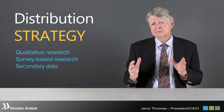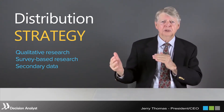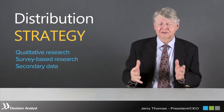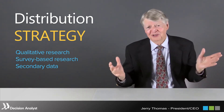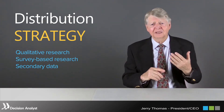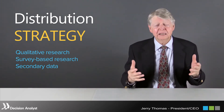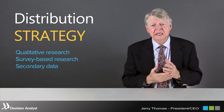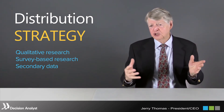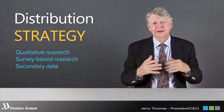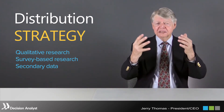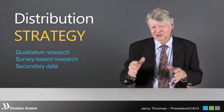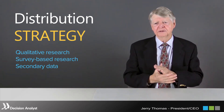Thirdly, there's a tremendous amount of secondary data available, much of it free from the US government, as well as many sources you can purchase. This includes demographic and population data, economic data down to the county level or census block group level, consumer spending data, information on transportation and traffic congestion, and competitive data. The types of secondary data that are important vary by product category, so there's no one-size-fits-all approach.